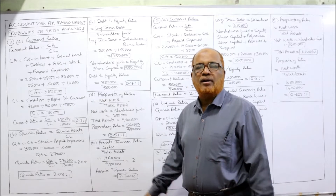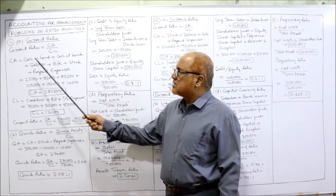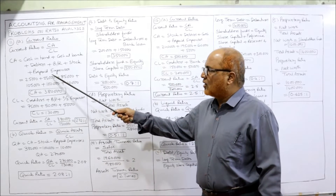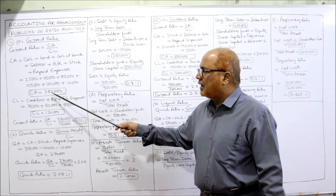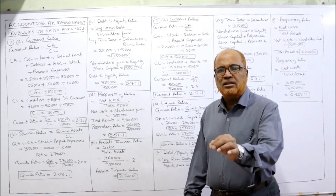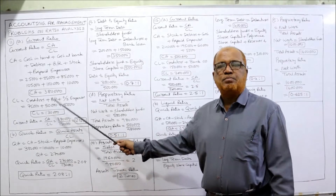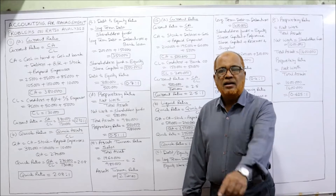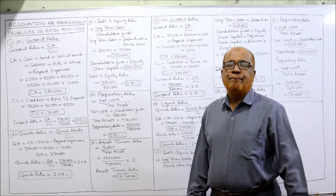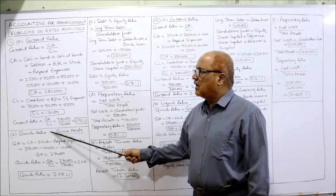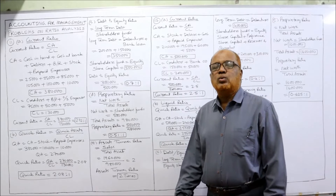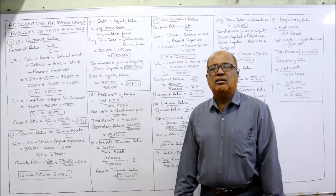First we are calculating current ratio. The formula is current assets divided by current liabilities. Current assets consists of cash in hand, cash at bank, debtors, bills receivable, stock, and prepaid expense — add all values from the problem to get 3 lakh 80,000. Current liabilities consist of creditors, bills payable and outstanding expenses — add up to get 1 lakh 30,000. Current ratio: 3 lakh 80,000 divided by 1 lakh 30,000 equals 2.92 is to 1.